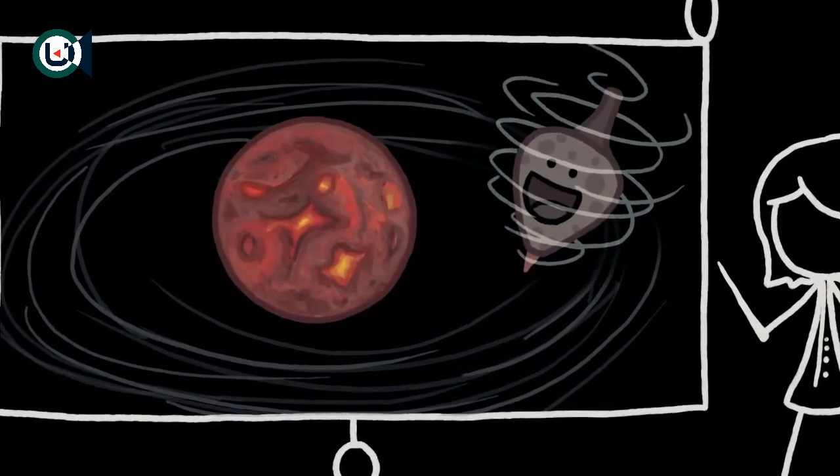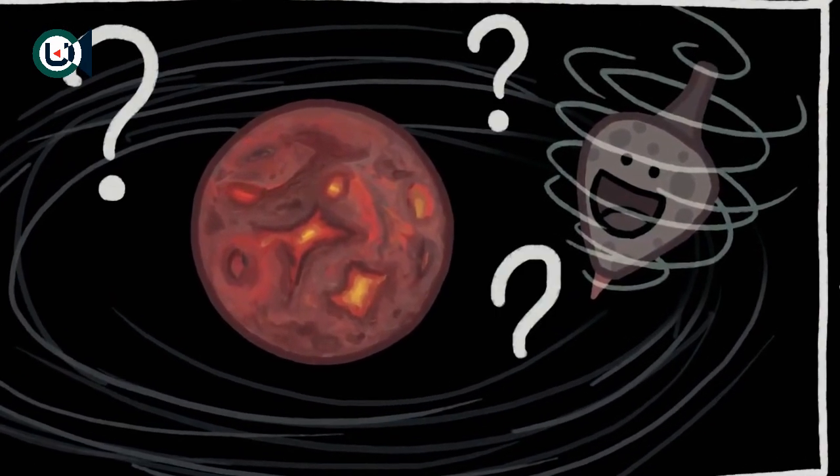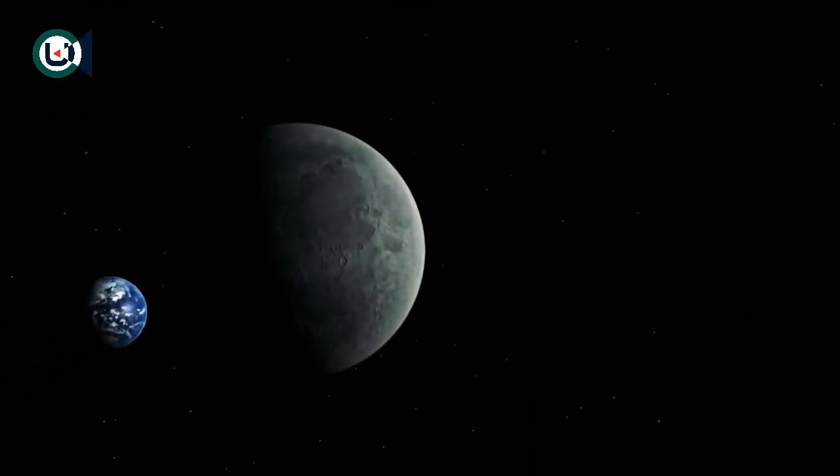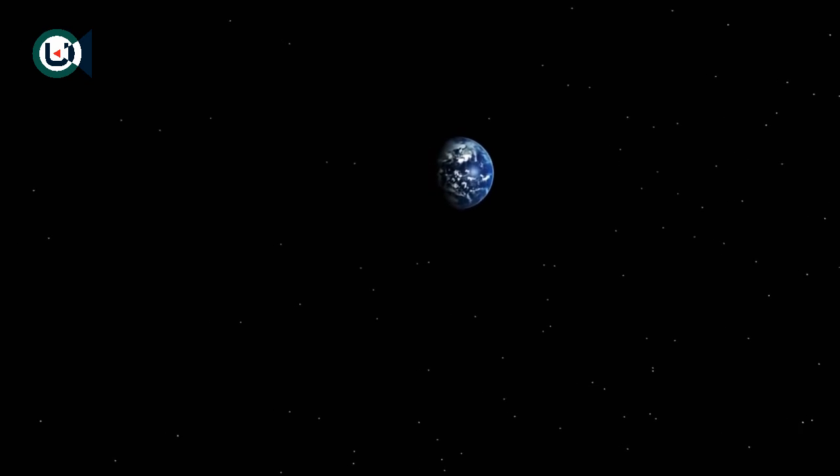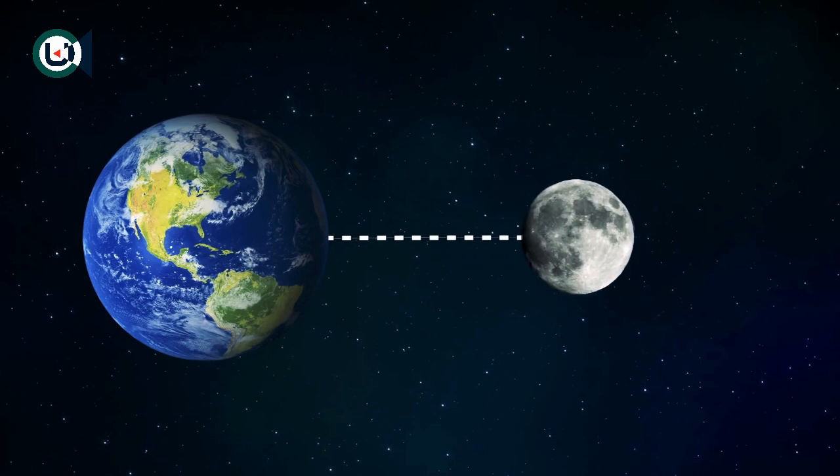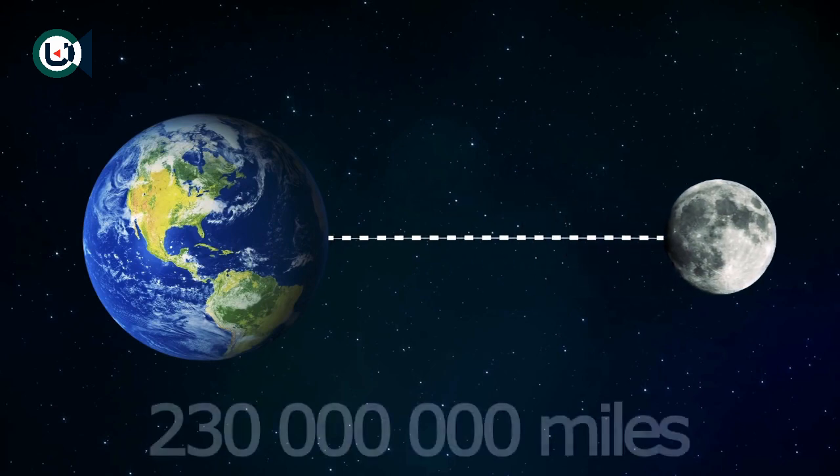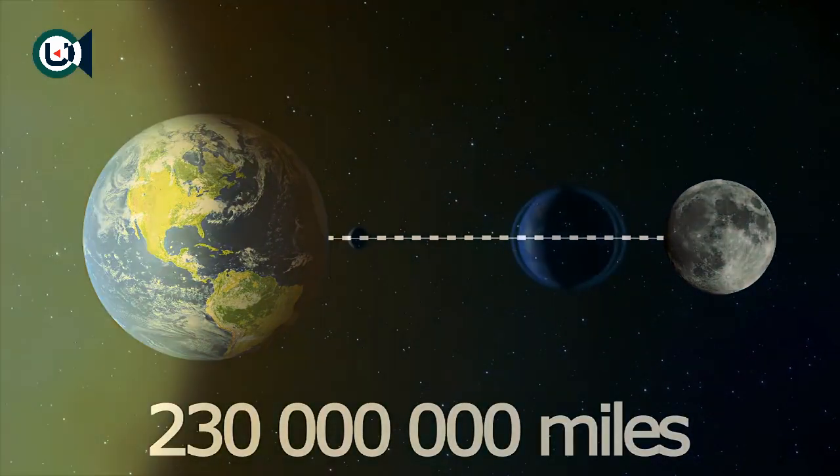In our early solar system, both the Earth and the Moon rotated independently of each other, but the Earth's gravity grabbed onto the tidal bulges and slowed down the rotation of the Moon. To compensate for the loss of momentum in the system, the Moon drifted away from the Earth to its current position, about 230,000 miles away.